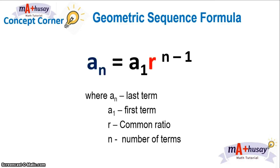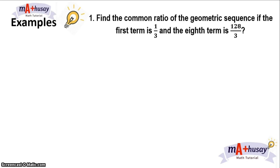We know that the geometric sequence formula is a sub n equals a sub 1 times the common ratio raised to n minus 1. We will use this formula to solve for the first term and the common ratio of a geometric sequence. Let's consider these examples.